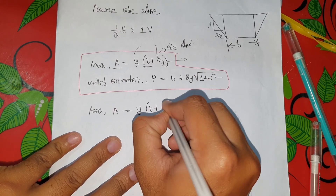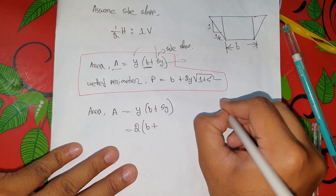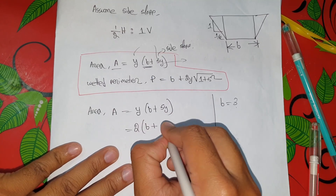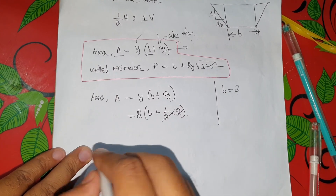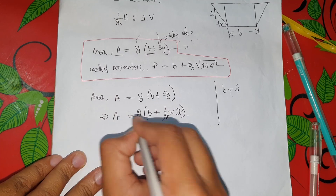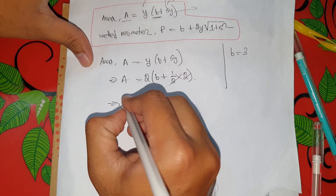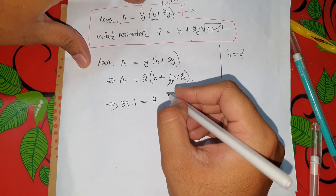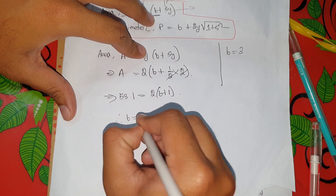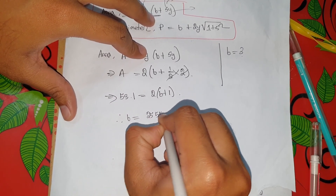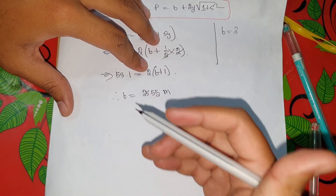Setting s equal to 1.5 and working through the area equation, we get A equal to 53.1 square meters. Then 53.1 equals 2B plus 1 times B, so the calculation gives B equal to 25.55 meters. Therefore B and Y values are determined.